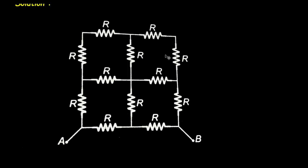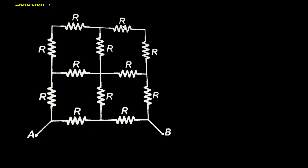Solution. First of all, we will take this network. We can see this problem is based on symmetry, because if we fold this horizontally, then we get the same network. If we fold this vertically, then also we get the same network — we get a mirror image. So no current will flow between this resistance and this resistance, which means we can remove them because no current will flow through them.